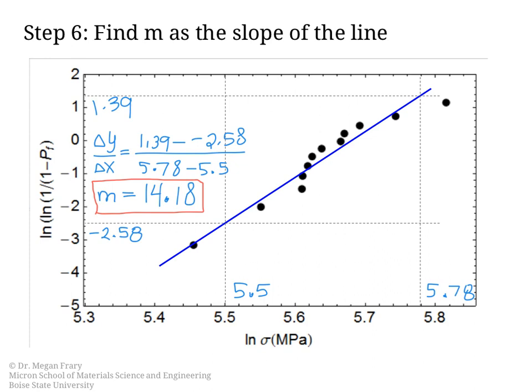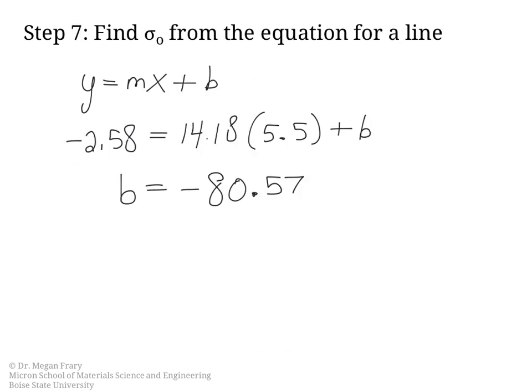So we can use that then to find b, the intercept. We just use the equation of a line, y equals mx plus b, and we plug in one set of our points. So we had this value of y for this value of x, and we solve for b equals negative 80.57.